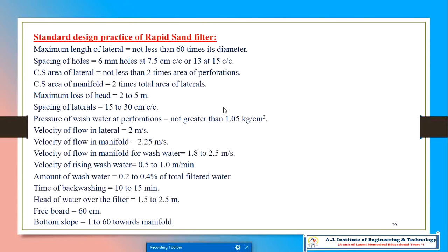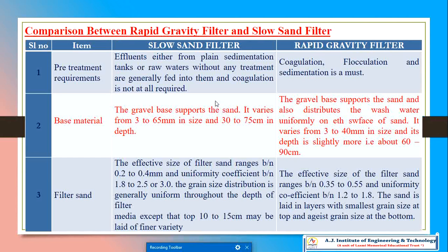The first comparison we are going to do is pretreatment requirements. In the slow sand filter, the effluent either from a plain sedimentation tank or raw water without any treatment are generally fed into them, and coagulation is not at all required.